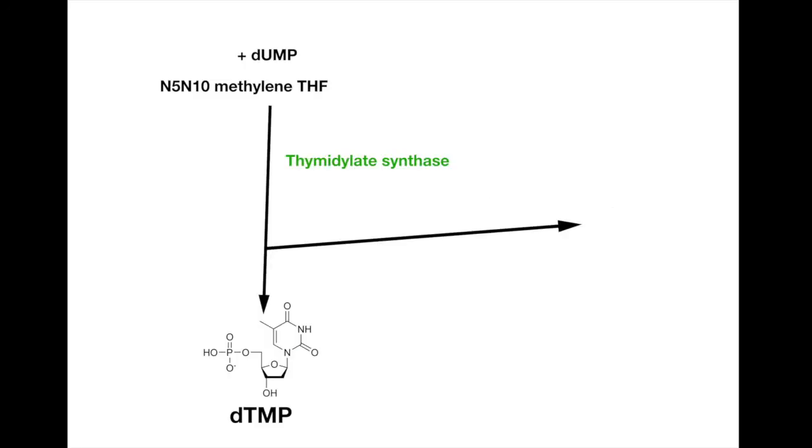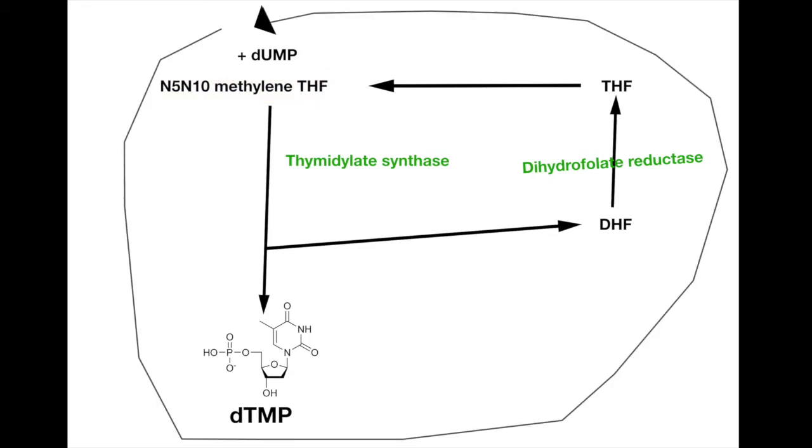When this reaction happens, a dihydrofolate, or DHF, is produced, which gets converted to tetrahydrofolate by dihydrofolate reductase. THF can be converted into N5N10-methylene THF, where it can react once again with dUMP. These last few reactions happen in a cycle where dUMP keeps getting converted into dTMP by the addition of N5N10-methylene THF, and kicking off a DHF, where DHF converts back into THF, and then N5N10-methylene THF.